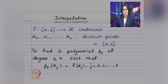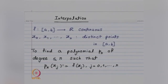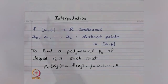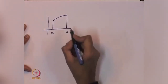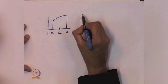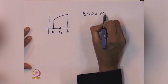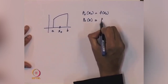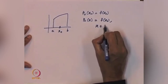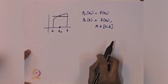First let us look at the case when n equals 0. That means we have got one point in the interval [a, b] and we want to find a constant polynomial. We have a function with a graph on interval [a, b] and a point x_0. We want to find a constant function such that p_0 at x_0 equals f(x_0). It is immediate that such a polynomial is p_0(x) = f(x_0) for all x in [a, b]. So we are looking at the value at x_0 and just considering the constant function.